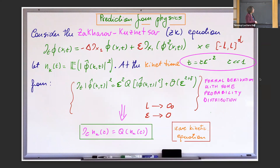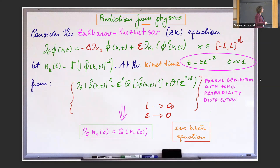There is the derivative in time, then a third-order operator: you take the derivative with respect to the first coordinate, then the Laplacian in all coordinates. So this is order three. If you are in one dimension, this is just a third-order derivative. Then there is epsilon in front of the nonlinearity, which is the typical KdV nonlinearity where the other derivative is only taken with respect to the first coordinate. We are in a box of size L with periodic conditions.